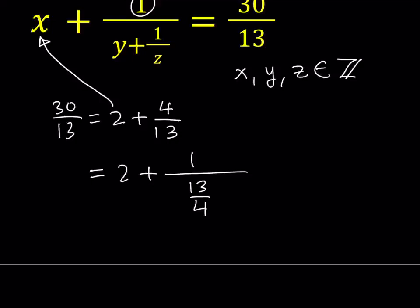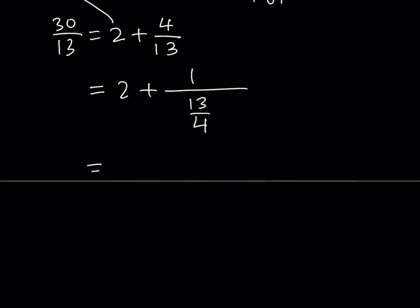Well, 13 over 4 is supposed to be the denominator here. But notice that y plus 1 over z is an integer plus 1 over an integer. 1 over an integer is something like 1 tenth, 1 fifteenth. And when we add the integer, obviously we're going to get a non-integer. And 13 fourths is not an integer. So what we're going to do next is just break down the 13 fourths. If you divide 13 by 4, you should be getting 3. And the remainder is 1 because 3 times 4 equals 12. So we can write it as 3 plus 1 fourth.